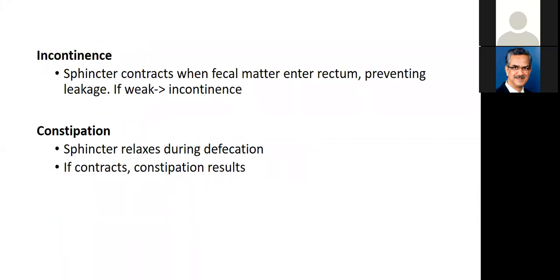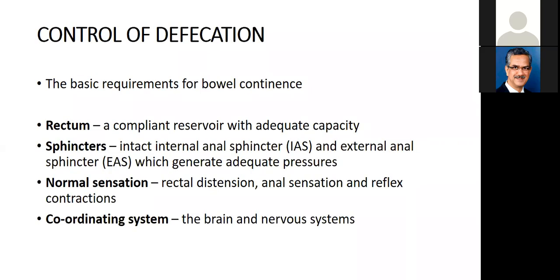If the sphincters contract when fecal matter enters the rectum and prevent leakage, weak sphincters lead to fecal incontinence. If the sphincters are in a state of spasm, it leads to constipation. The basic requirement for control of defecation is a rectum that acts as a reservoir with adequate capacity, sphincters generating adequate pressure, normal sensations, and a coordinating system between the brain and nervous system.